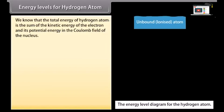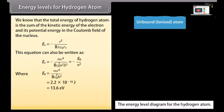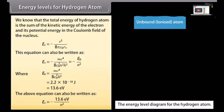Energy levels for hydrogen atom: The total energy of the hydrogen atom is the sum of the kinetic energy of the electron and its potential energy in the Coulomb field of the nucleus: En = −E²/(8πε₀Rn). This can also be written as En = −ME⁴/(8ε₀²n²h²), where E₀ = ME⁴/(8ε₀²h²) = 2.2 × 10⁻¹⁸ Joule = 13.6 eV. Thus En = −13.6/n² eV.